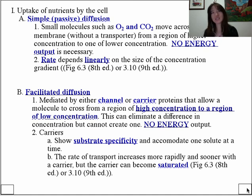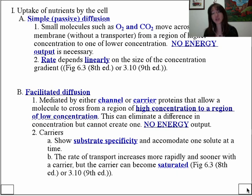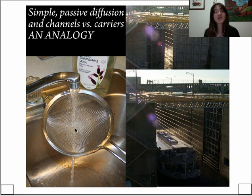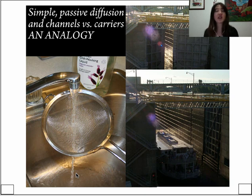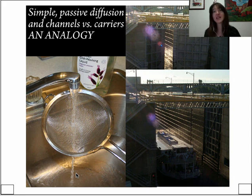Channels are kind of like water passing through a colander — the water is really not impeded by passing through, and there's essentially a linear function describing this: the greater the concentration gradient, the faster the movement through the channel. Carriers, on the flip side, are much more like a ship passing through a lock. A lock can only accommodate one ship at a time, so if there's a whole bunch of ships upstream, they have to wait their turn — that's saturation.